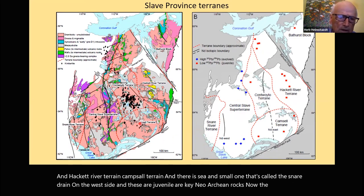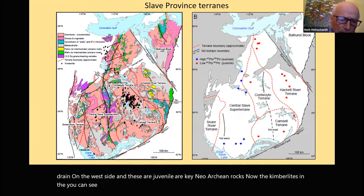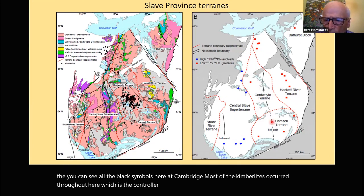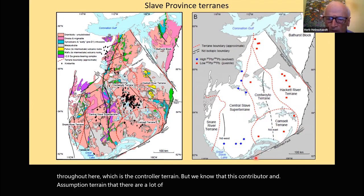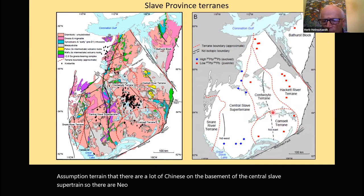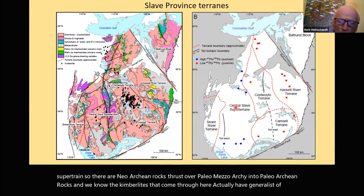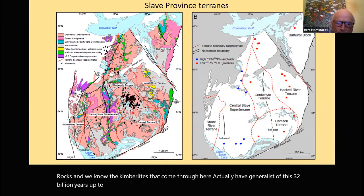The Contwoyto and the Hackett terrain are actually thrust nappes on the basement of the Central Slave Superterrane — Neoarchean rocks thrust over Meso- to Paleoarchean rocks. Kimberlites coming through here have actually sampled xenoliths with ages up to 3.2 billion years. The geological setting: we had an early terrain that is Paleo- to Mesoarchean, with a quartzite sequence called the Central Slave Cover Group, overlain by Neoarchean volcanic rocks at 2.7 Ga, turbidites, and finally a polymicitic conglomerate — the entire sequence deformed and capped by a granite bloom at 2.6–2.58 Ga.